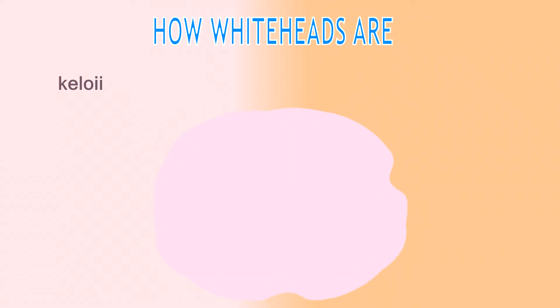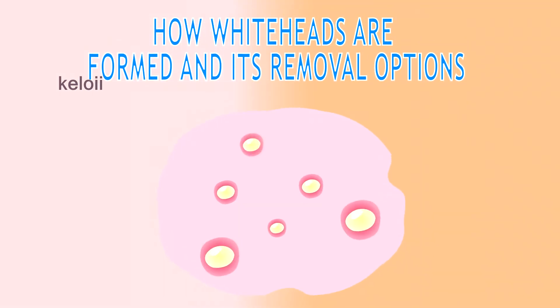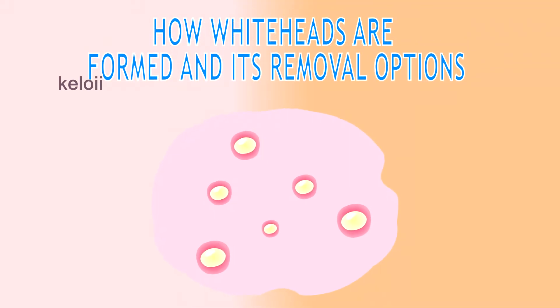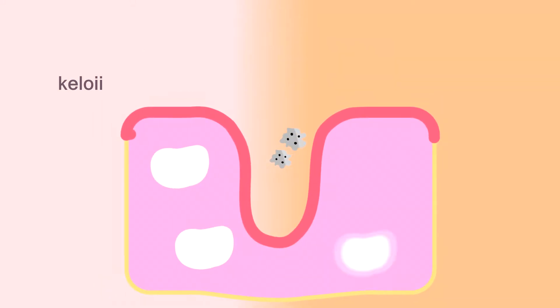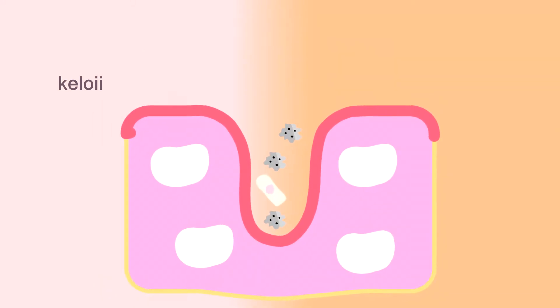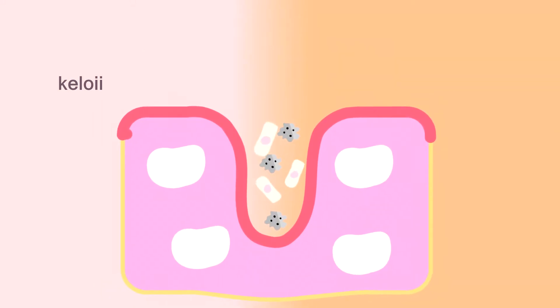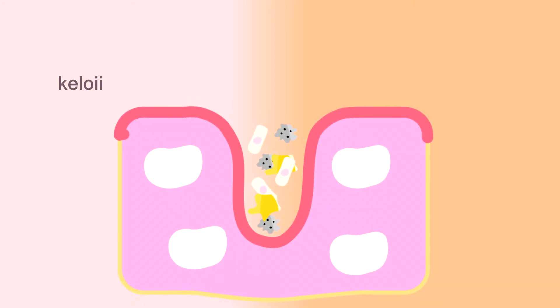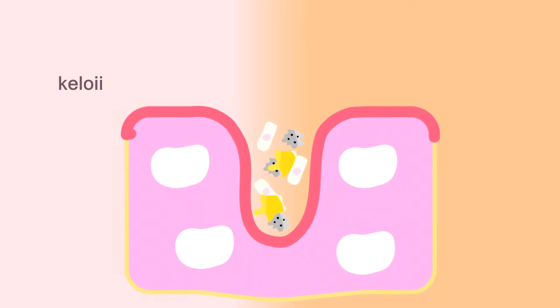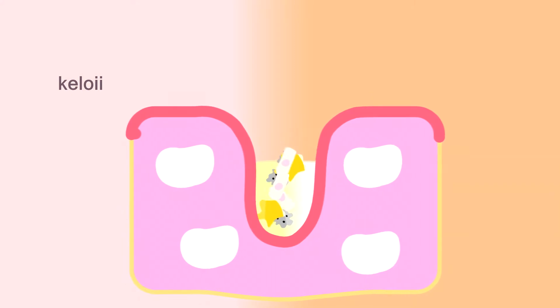Let's get into how whiteheads are formed and its removal options. Whiteheads develop when dead skin cells, sebum oil, and dirt clog the pores. The excess sebum together with dead skin cells forms into a whitehead.